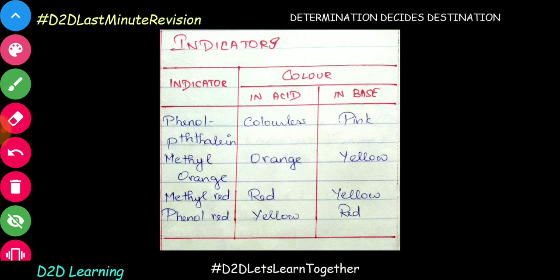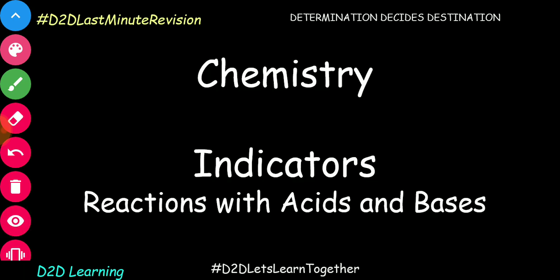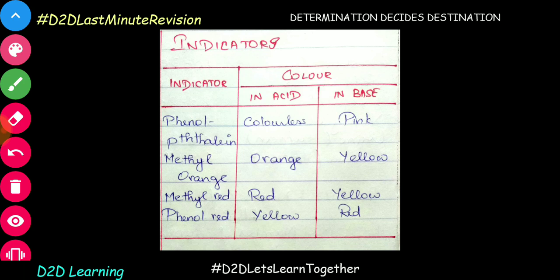Let's review. Phenolphthalein: base color is pink, acid is colorless. Methyl Red: acid is red, base is yellow. Methyl Orange: acid is orange, base is yellow. Phenol Red: base is red, acid is yellow. Just keep revising this and add a little bit each time. So just keep revising this for continuous improvement.